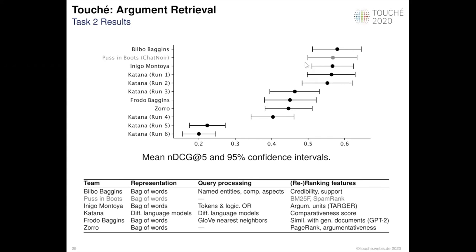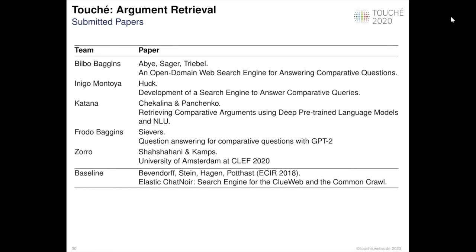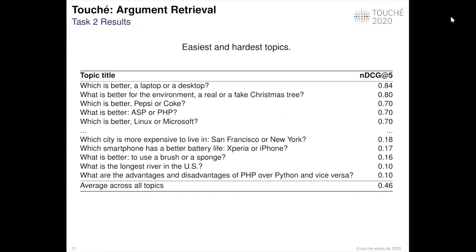It is interesting to note that the most effective approaches account for credibility and support of arguments in documents, apply the argument tagging tool TARGER to find argumentative units, and apply query pre-processing such as identifying named entities or comparison aspects. For the second task, we received six papers, and one participating team was unique in participating in both tasks. We also performed analysis of average retrieval effectiveness across all approaches per topic. A general observation is that simpler and shorter comparative search queries are easier for systems to retrieve relevant documents.